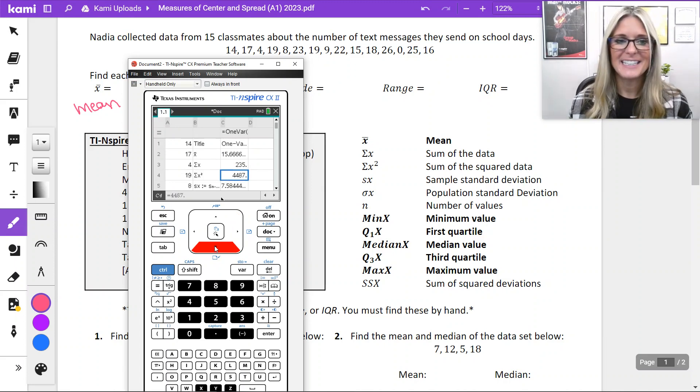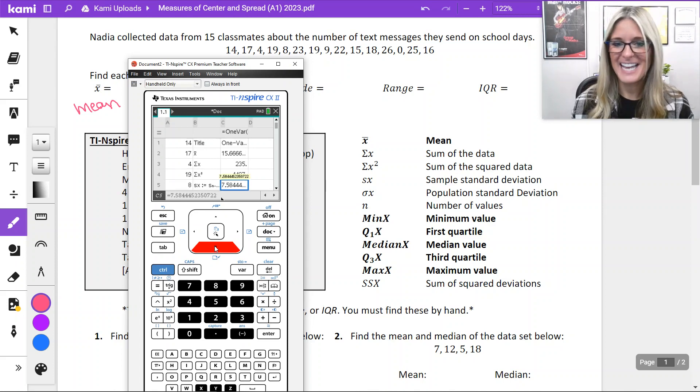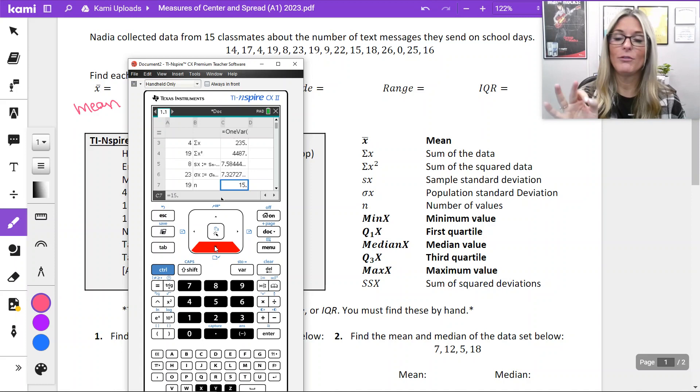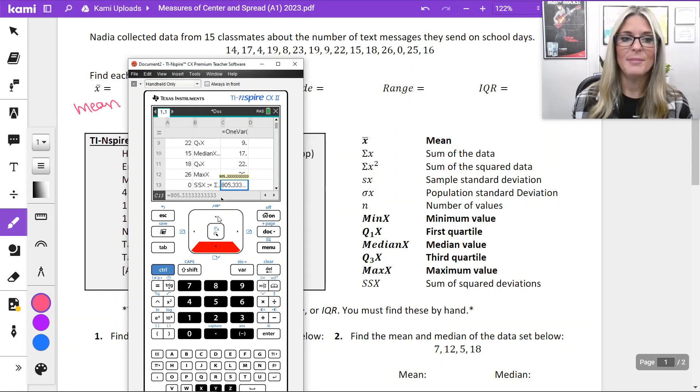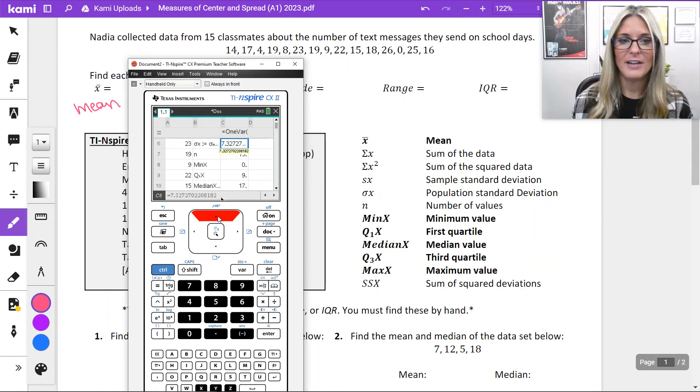ΣX is sum of data, we're not going to use that. ΣX squared, SX, σX, we're not going to use. N can be helpful for you to check. N is going to be the number of values in the data set. I did enter 15 values. Minimum is zero. Q1 is nine. Median is 17. Q3, 22. Maximum 26. SSX, we're not using in this class.